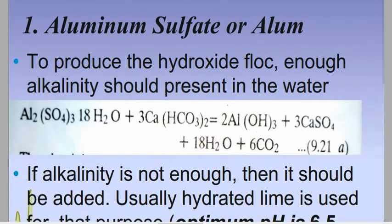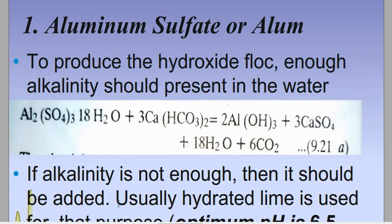Aluminium sulphate or alum is the most common and universal coagulant used for waterworks. Its chemical composition is Al2(SO4)3·18H2O. It requires the presence of alkalinity in the water; if alkalinity is not enough, it must be added. In the absence of sufficient alkalinity, the water must be converted to alkaline condition for effective floc formation.